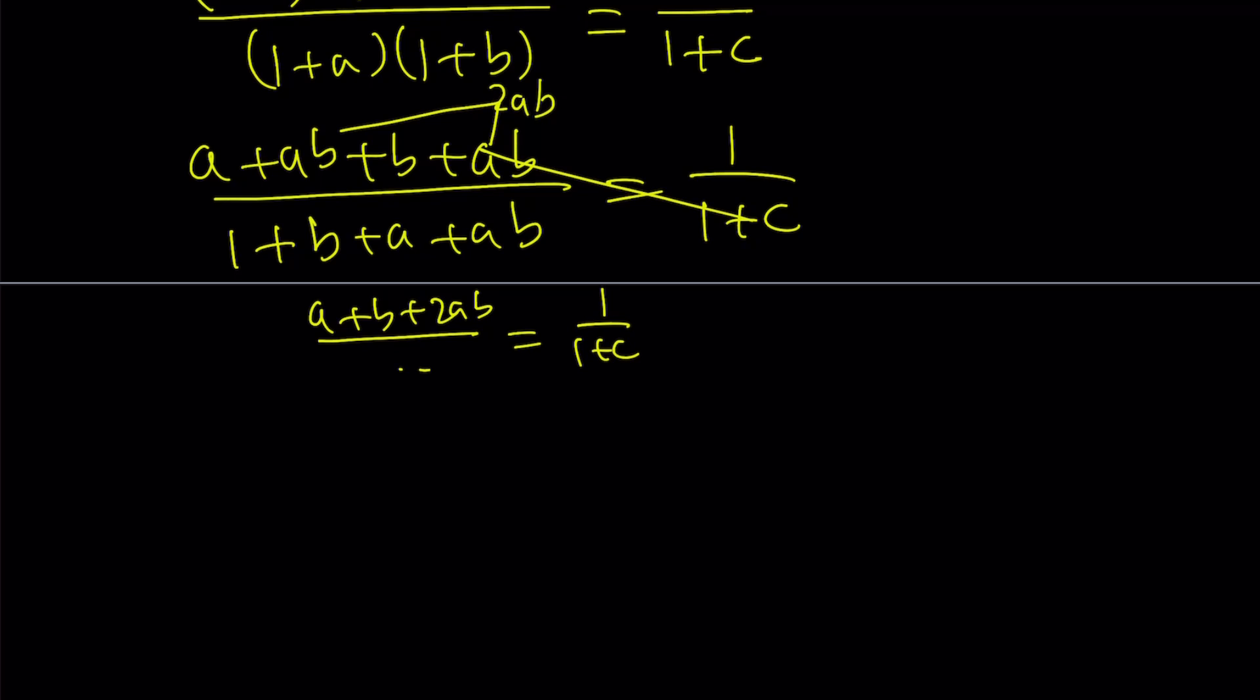So we get a plus ab plus b plus ab. That is divided by 1 plus... We can also distribute that. Let's go ahead and do it. It's going to give us 1 plus b plus a plus ab. And then we're going to multiply these. So now if you go ahead and notice that these two will give us 2ab. So don't forget that. We have on top a plus b plus 2ab. And the bottom is the same. And we're just going to multiply.